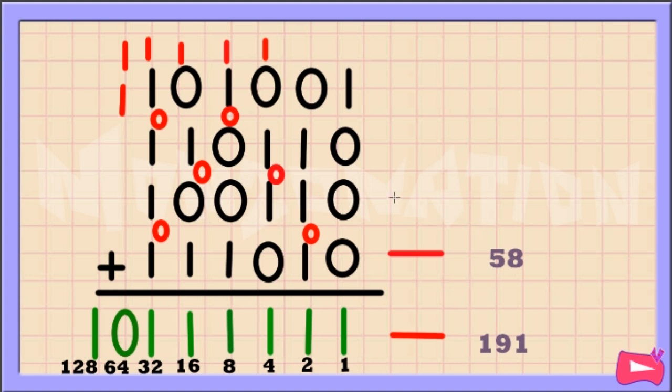Fourth row, 2 plus 8 plus 16 plus 32 equals 58. Third row, 2 plus 4 plus 32 equals 38. Second row, 2 plus 4 plus 16 plus 32 equals 54.